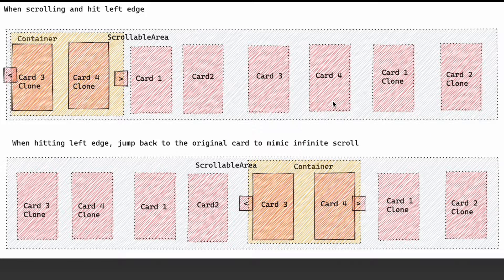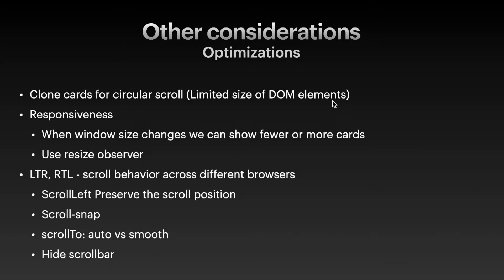What happens when there are 5 cards? It is actually pretty similar, but we copy 3 cards instead of 2. So we will have card 2, 3, and 4 cloned before original card 1, and card 0, 1, 2 cloned after original card 4. By using this approach, we can achieve infinite horizontal scrolling, and we also only have a limited size of DOM elements. We can use the resize observer to monitor the viewport width, and whenever there is a resize of the screen, we can decide how many cards can fit into the container. We can also hide the scroll bar so that the experience is better.